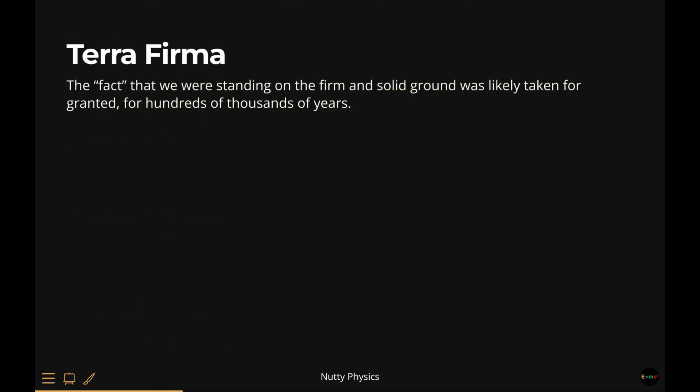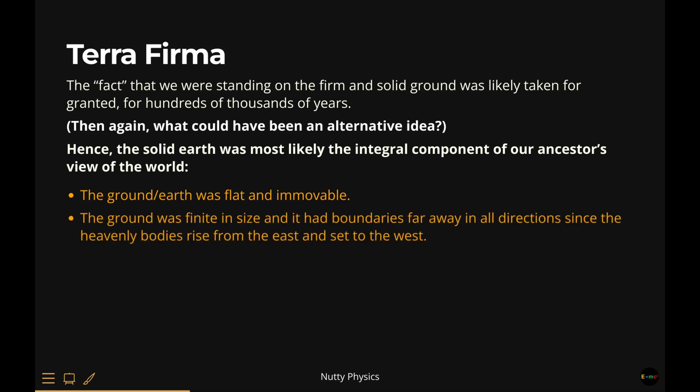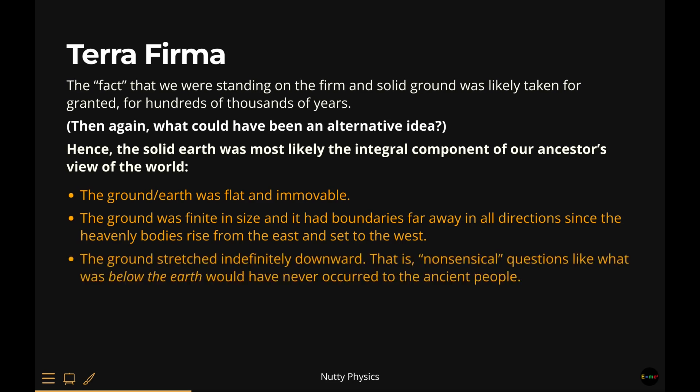Terra firma. If you think about it, it is obvious. We are standing on the firm and solid ground, which is, for all intents and purposes, infinitely heavy, infinitely large, immovable, and permanently present. Hence, the solid earth was most likely the integral component of our ancestors' view of the world. The ground earth was flat and immovable. The ground was finite in size and it had boundaries far away in all directions, since the heavenly bodies rise from the east and set to the west. The ground stretched infinitely downward. That is, nonsensical questions like what was below the earth would have never occurred to the ancient people. Just imagine for a minute that how much comfort this knowledge gave our ancestors, that is, the fact that we were standing and living on a firm and stable ground, which exist permanently. How could you think of any other possibilities?